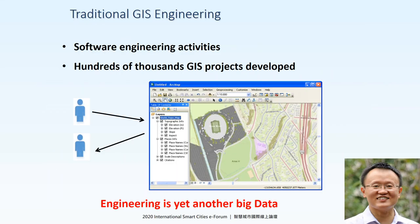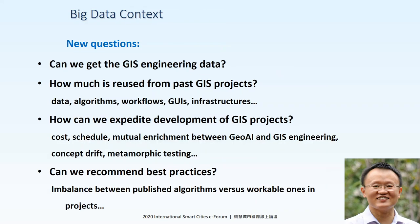Traditional GIS engineering is a kind of software engineering activity. Every student in school learns how to create a GIS project, and after they graduate, they also develop hundreds of thousands of GIS projects. So engineering, we can say, is another kind of big data. In the big data perspective, new questions arise. Can we get the GIS engineering data? How much is reused from past GIS projects — the data, algorithm, workflow, GUI infrastructure?